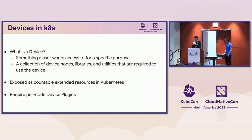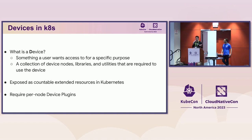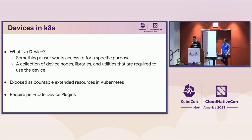What is a device? A device with a capital D, or resource, is something that a user wants access to for a specific purpose, such as training a machine learning model. Going through the various levels of abstraction, you end up with a collection of device nodes, libraries, and utilities required to access the device in an environment such as a container. In Kubernetes, these are exposed as countable extended resources, which can be requested by a user, requiring a per-node device plug-in.